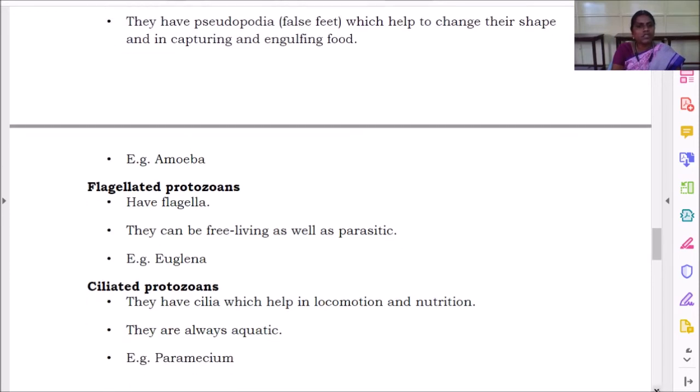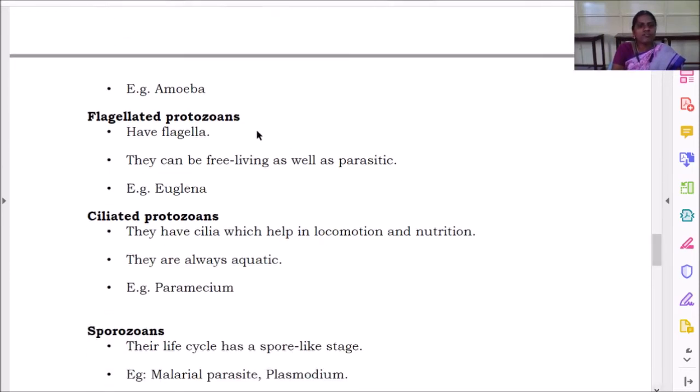Flagellated protozoans. Flagellated protozoans have flagella. They can be free-living as well as parasitic. Example for this is euglena.